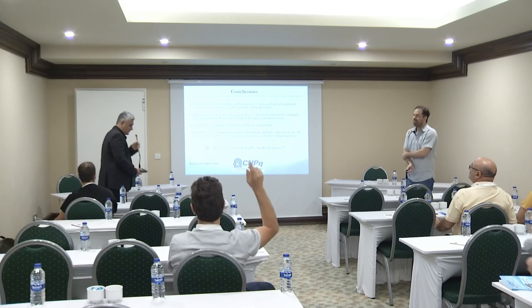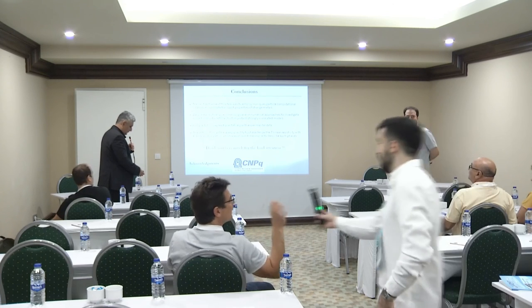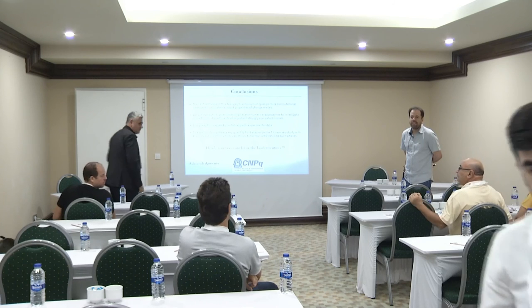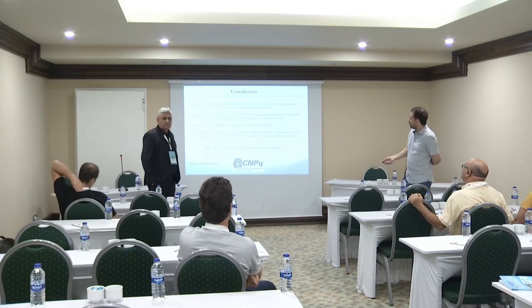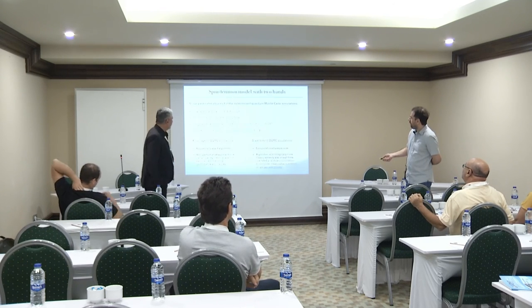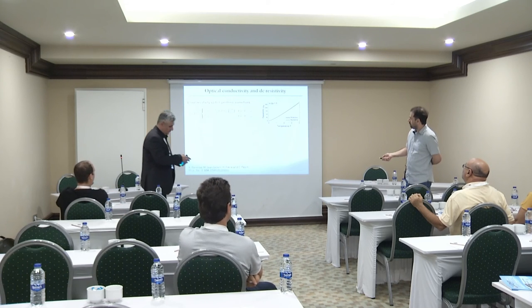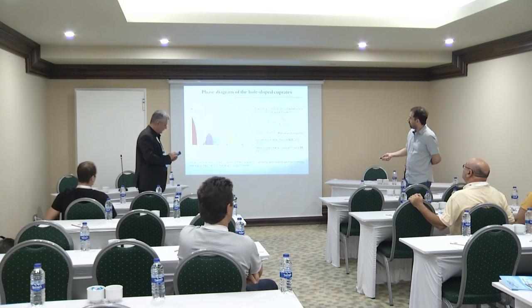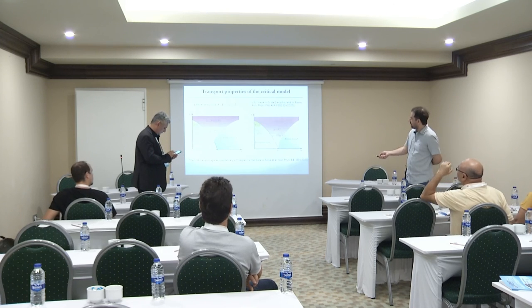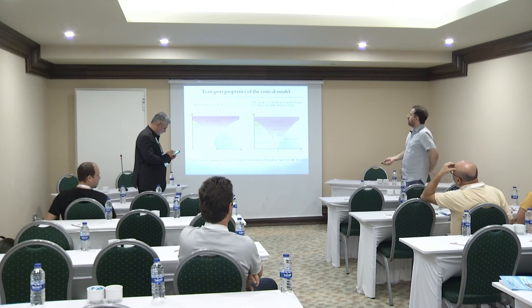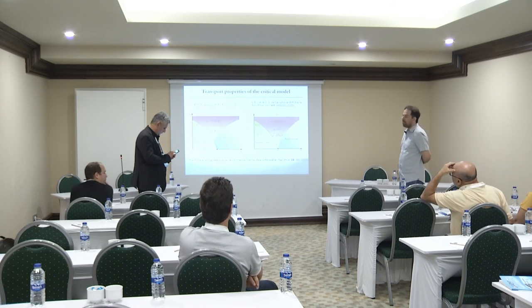Thank you very much, very nice talk. So in the first part, for the nematoelastic coupling, you had a quantum critical point above which there was a Fermi liquid. Could you comment a little bit more on how this is possible — how is the correlation length not diverging at the quantum critical point as temperature goes to zero? How is the scattering rate changing?